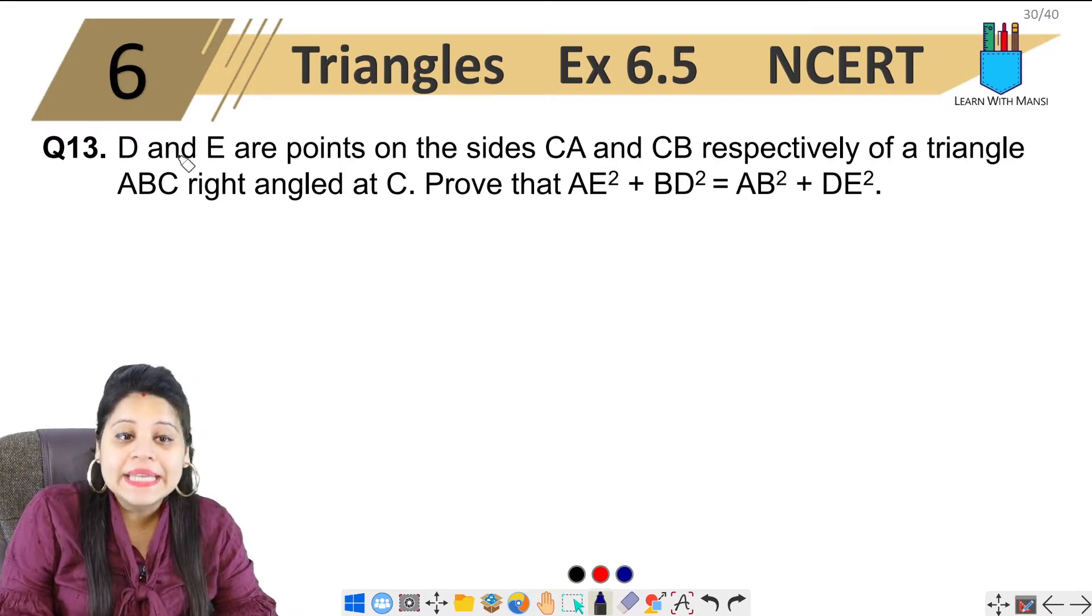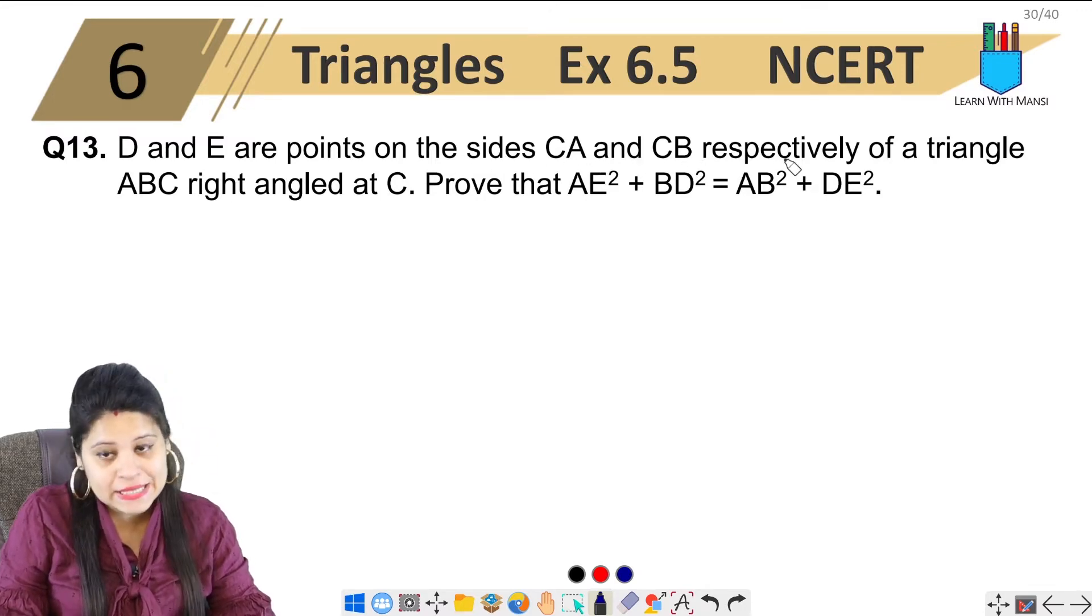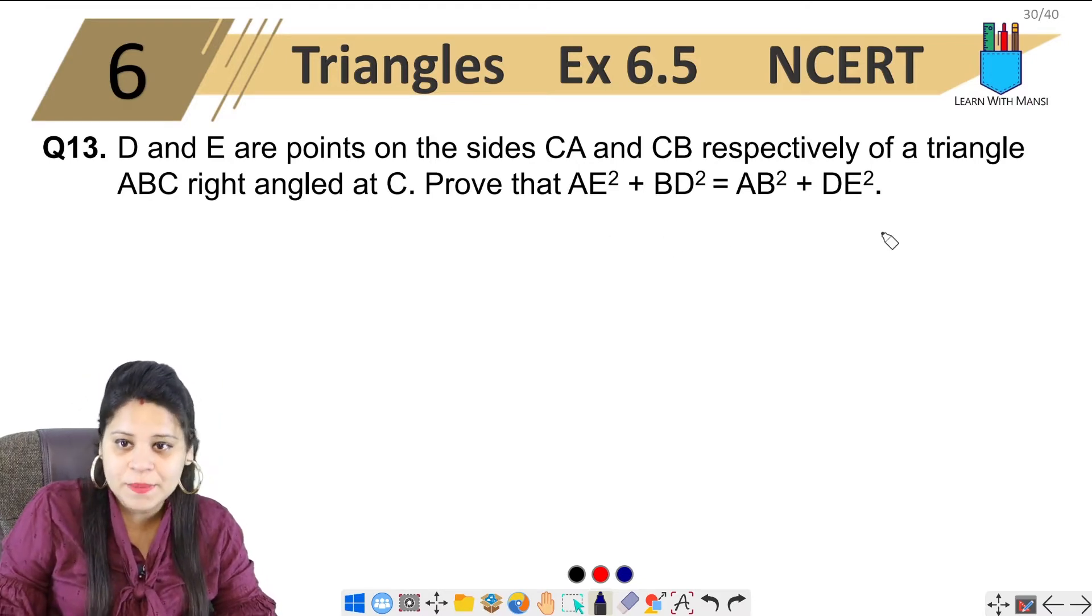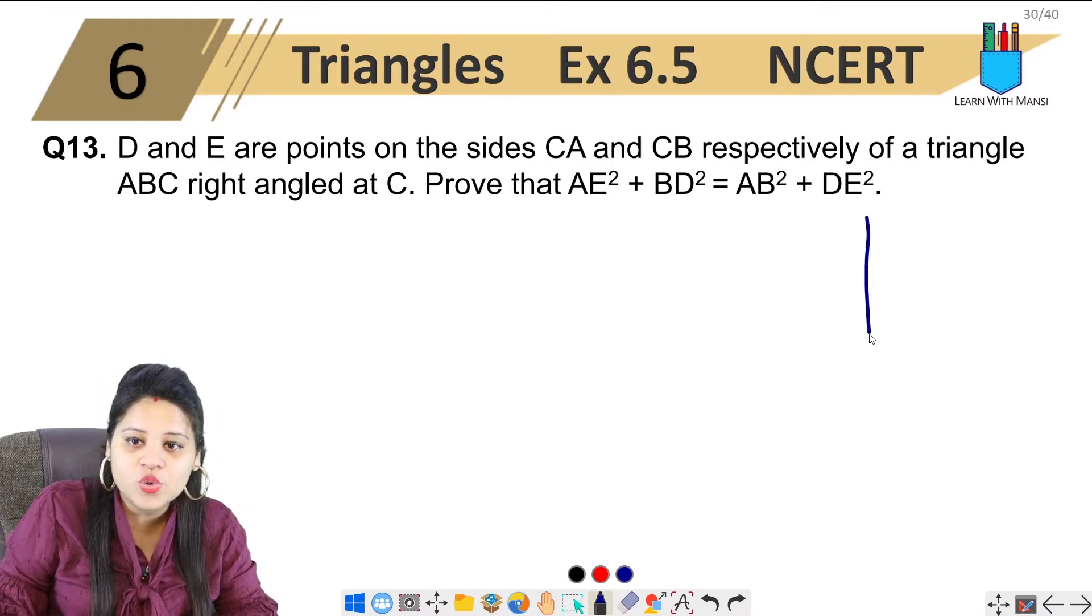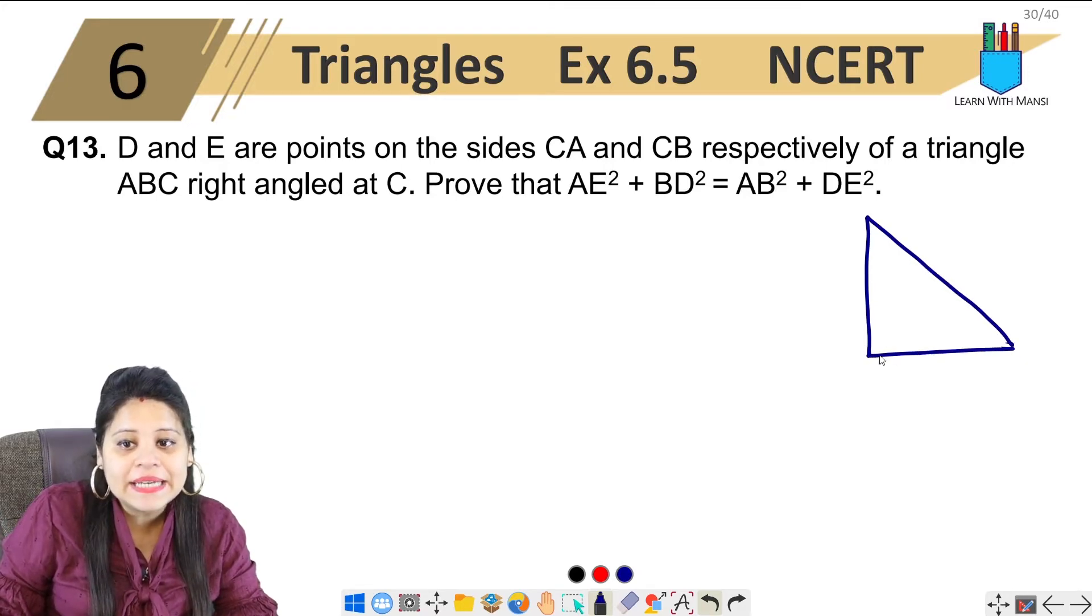The question says D and E are points on the sides CA and CB respectively of a triangle ABC right angled at C. So first of all, we have a triangle here which is a right angled triangle, and this is right angled at C.